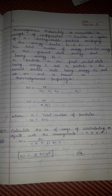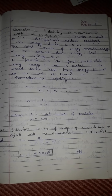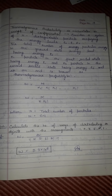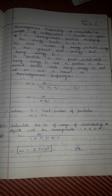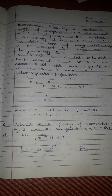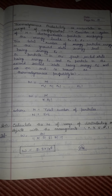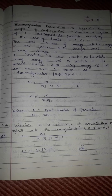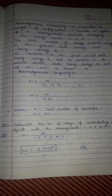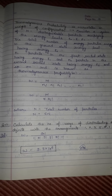This is thermodynamic probability, also called microstates or weight of configuration. The thermodynamic probability is denoted by W. The formula is: W = N! / (N₀! × N₁! × N₂! × ... × Nᵢ!), where N is the total number of particles and the summation of Nᵢ equals N.